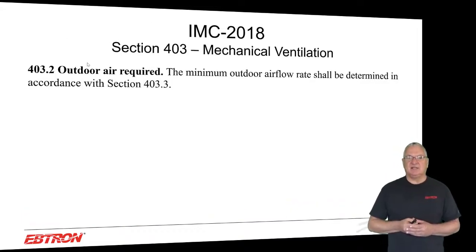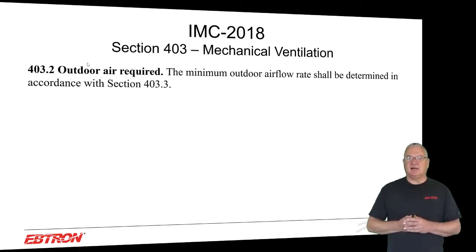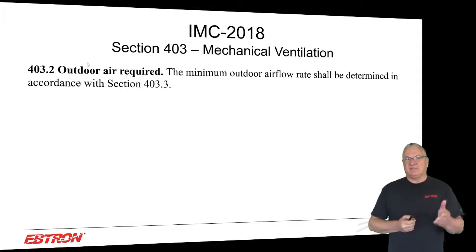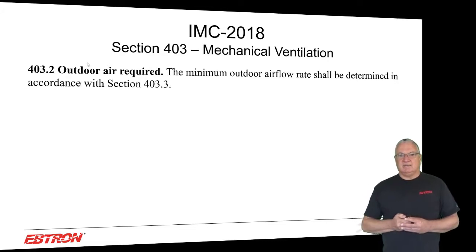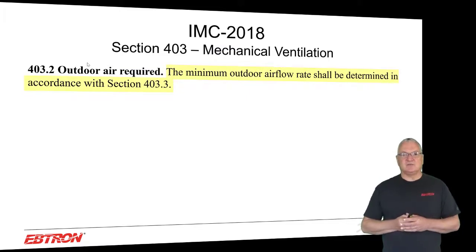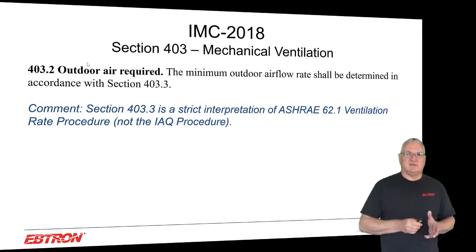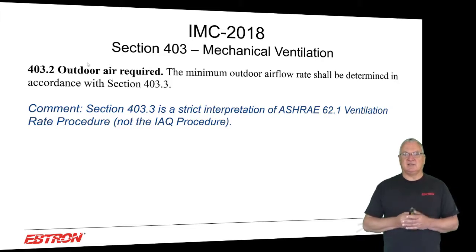When you look at the IMC 2018 — regardless of what version your state has adopted — pretty much all versions still reference the same ventilation requirements of Standard 62, because those ventilation requirements changed in 2004 and really haven't changed since. The minimum outdoor airflow rate shall be determined in accordance with section 403.3. If you sit the IMC ventilation requirements next to the ventilation rate procedure, you'll quickly realize they're the same thing.